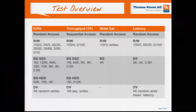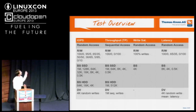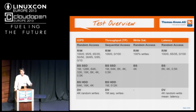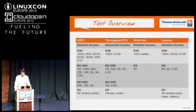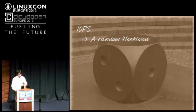Here is the test overview. We do four tests for SSDs: the IOPS test, throughput, write saturation, and latency. In the second line you can see the read-write mix — we do read-write mixes for some tests, for example 100% read, 0% write. We use different block sizes for SSDs and hard disks. The last line is about the dependent variable — the point where we determine the steady state has been reached.